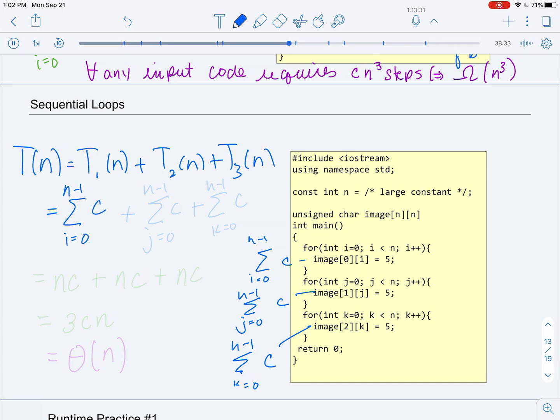So we're going to have three summations here that are not nested, and you'll see we have our summations indexed by i, j, and k. They each do a constant amount of work, and now we can do the work of putting these in the closed form. So the first summation is just going to be n times c, because we're adding cn times, and the second will be n times c.